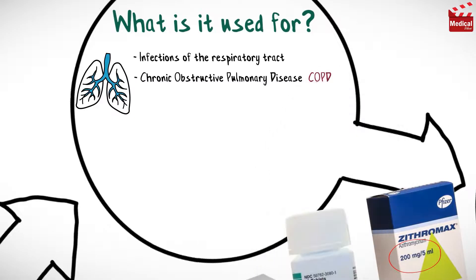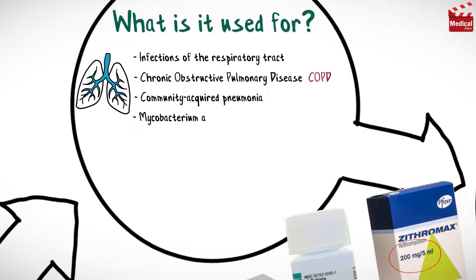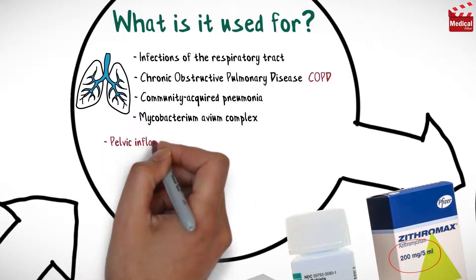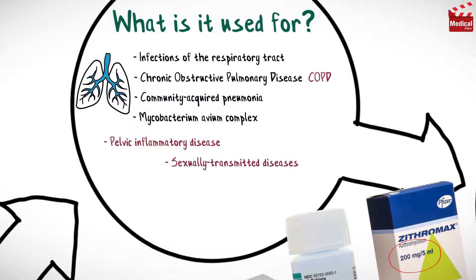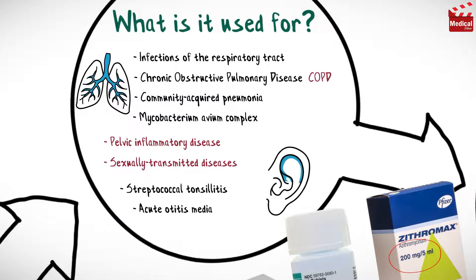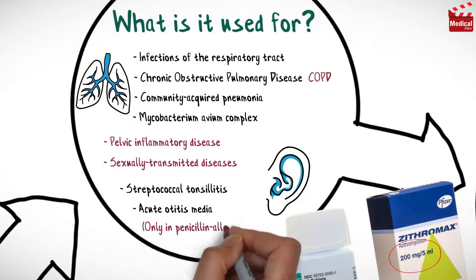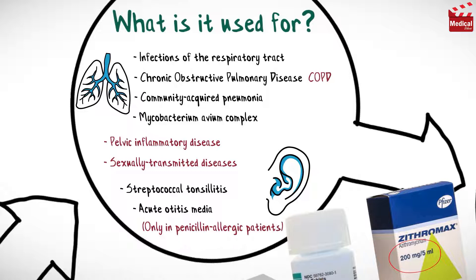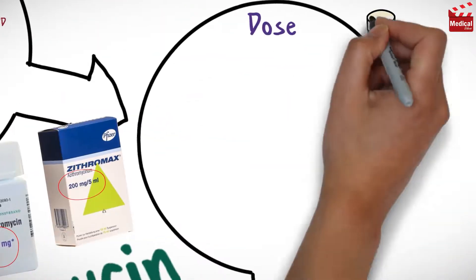Azithromycin is used in the treatment of infections of the respiratory tract, chronic obstructive pulmonary disease, community-acquired pneumonia, Mycobacterium avium complex, pelvic inflammatory disease, and sexually transmitted diseases caused by susceptible organisms. It is also used in the treatment of streptococcal tonsillitis and acute otitis media, only in penicillin-allergic patients.